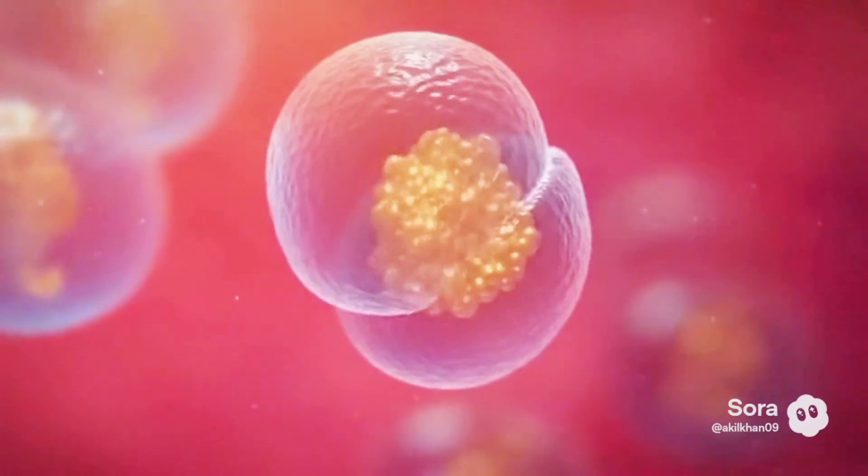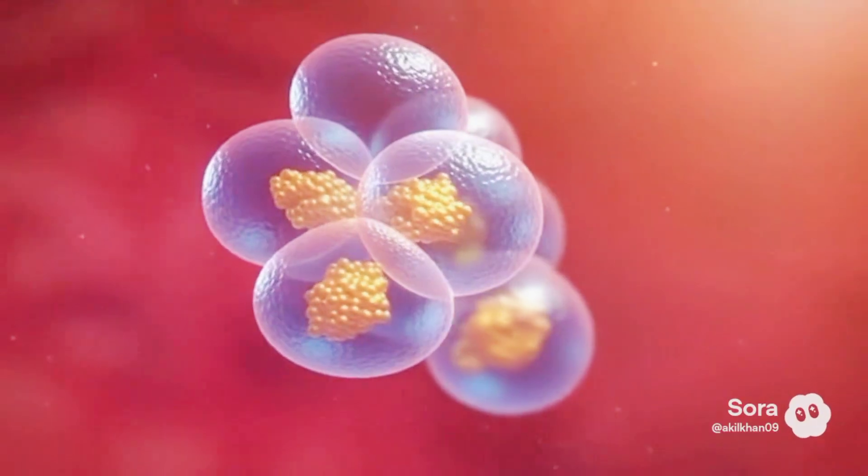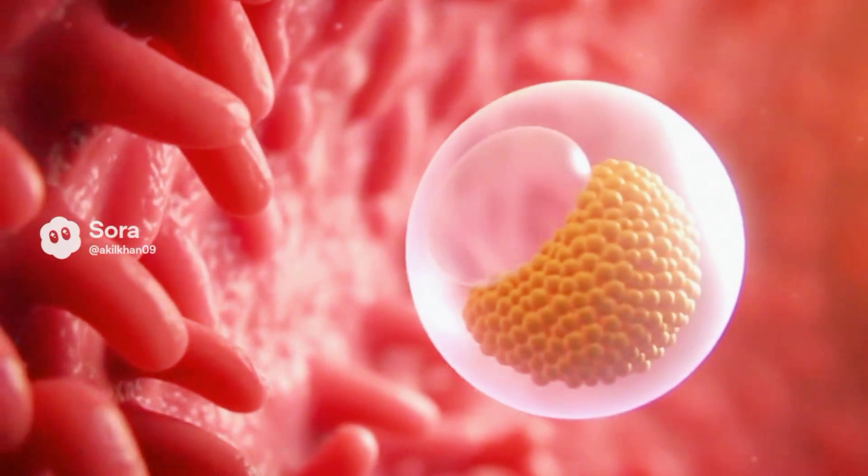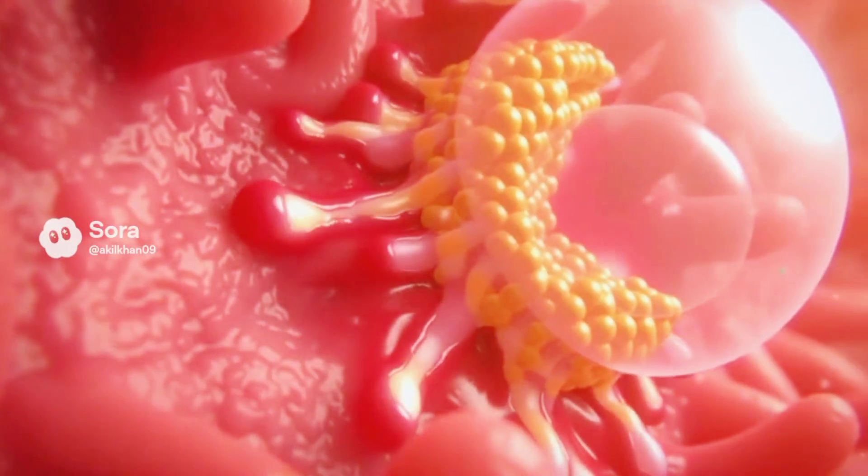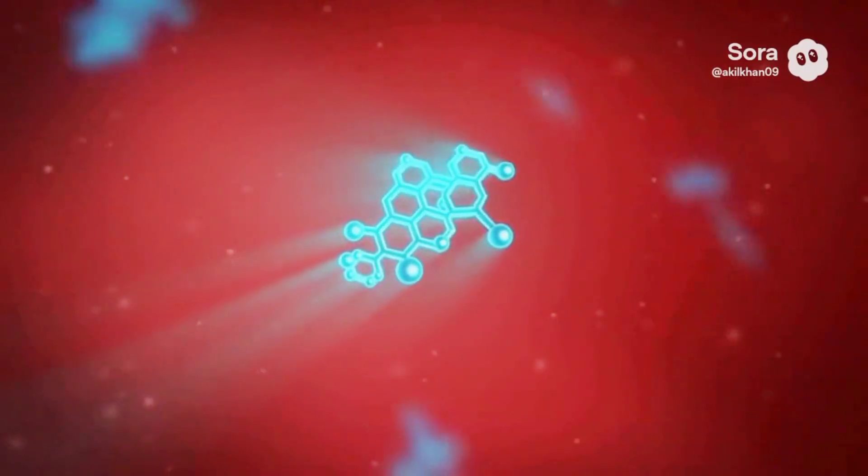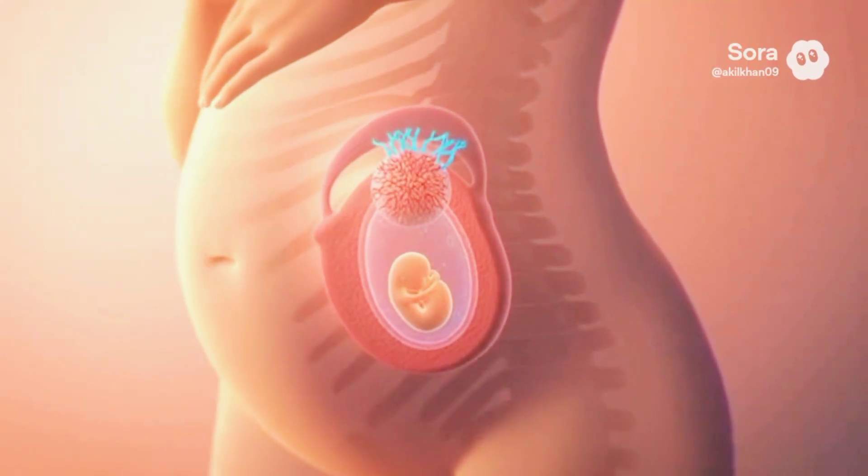Here, the tiny blastocyst settles. Deep inside, a single cell divides, then divides again, building a tiny community of life. Some of these cells will become the fetus. Others, the life support system around it.